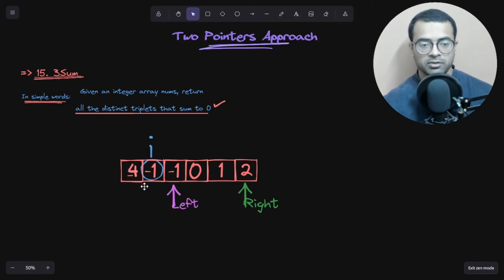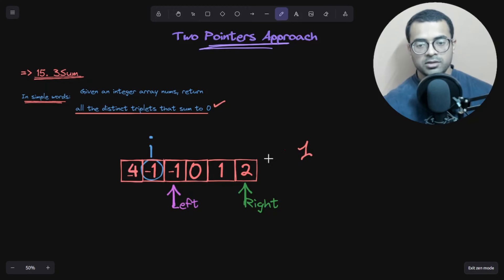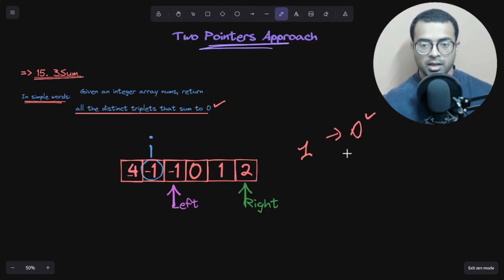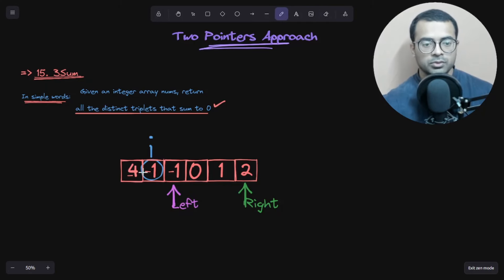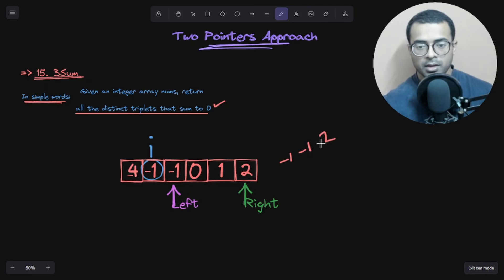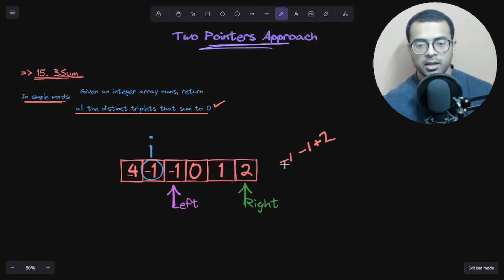Now i is at minus one (index one). We need two numbers that sum to one, so that minus one plus one equals zero. Left starts right after i, right starts from the very end. Left is pointing to minus one and right is pointing to two.